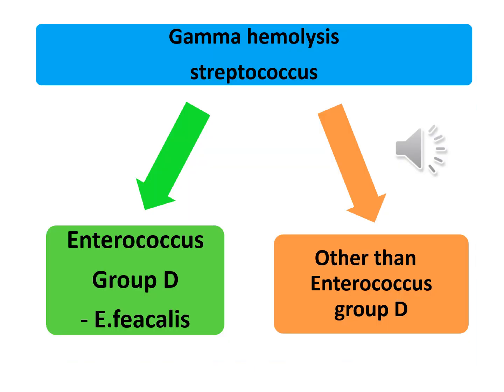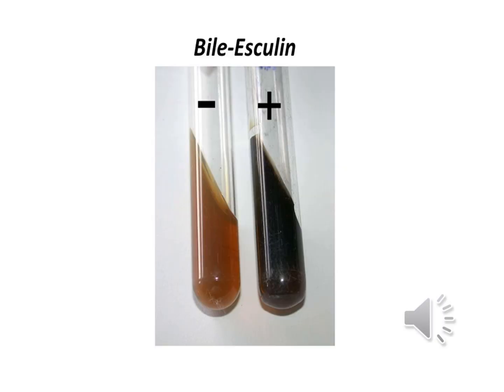Gamma hemolysis is indicative of no hemolysis around the bacterial colony. An example of non-hemolytic Streptococcus are Enterococcus group D such as Streptococcus faecalis and non-enterococcus group D. The bile-esculin test is used to differentiate between Enterococcus group D and other non-enterococcus species; Enterococcus group D gives a positive bile-esculin test. The test is based on hydrolysis of esculin into glucose and esculetin by esculinase. Esculetin reacts with ferric citrate to form a dark brown or black color.